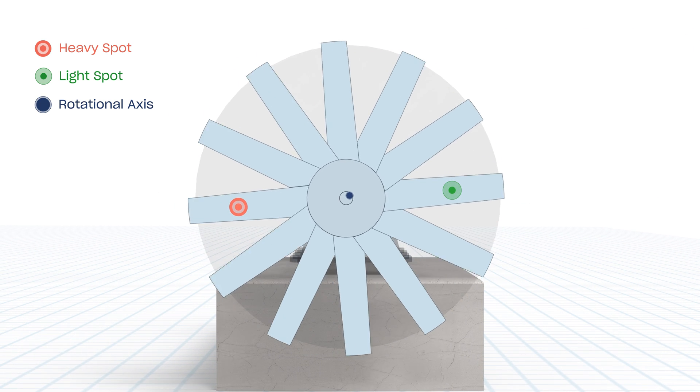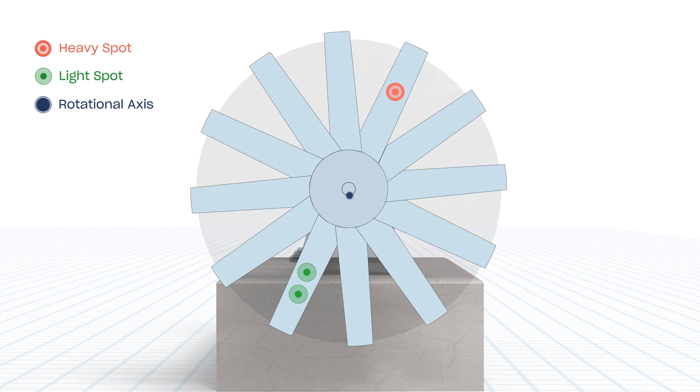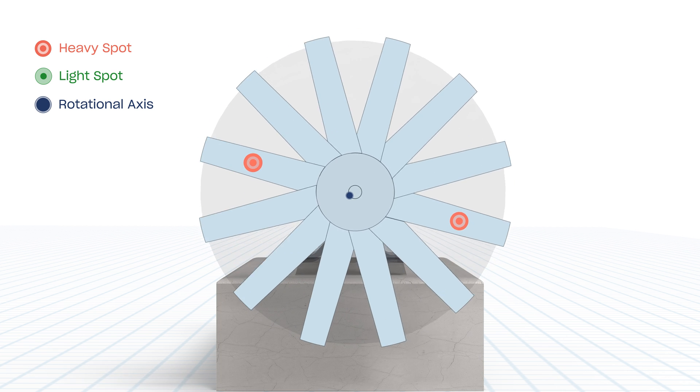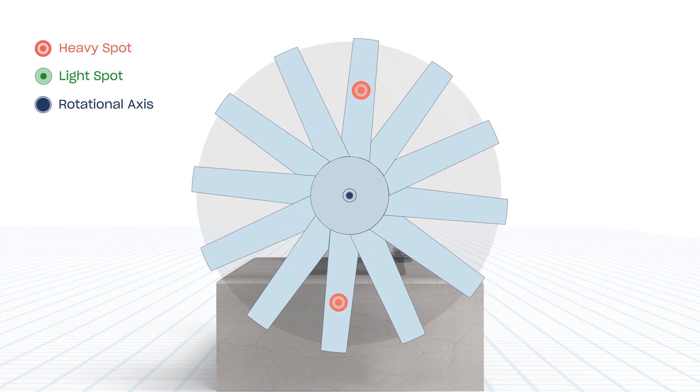In this illustration we will add weight to counterbalance the heavy spot so that the mass is evenly distributed around the axis of rotation.